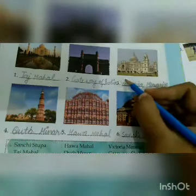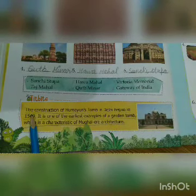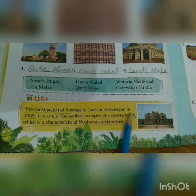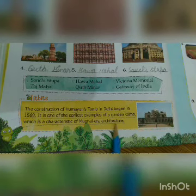Now look at this again: Taj Mahal, Gateway of India, Victoria Memorial, Qutub Minar, Hawa Mahal and Sanchi Stupa. Now tidbits — underline all these lines. The construction of Humayun's Tomb in Delhi began in 1569. It is one of the earliest examples of a Garden Tomb, which is a characteristic of Mughal era architecture.